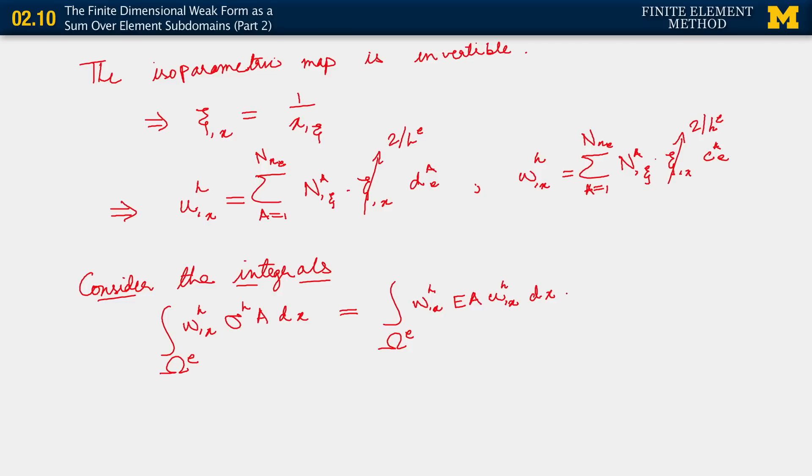Okay, see what I've done, E times u_h,x is sigma_h from our constitutive relation. And this, I'm now going to write by bringing in our expressions on just the line above. For u_h,x and w_h,x, okay? I'm first going to write w_h,x. It is sum over a, I won't write the limits on a because it gets just too clunky.